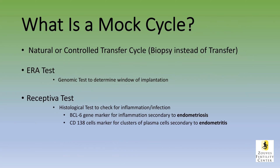So what is a mock cycle? It can be done with the natural cycle or a controlled transfer, but instead of putting an embryo back, we actually do an endometrial biopsy at exactly the same time that you would otherwise be doing the transfer. We take that sample of endometrium, we divide it into two aliquots, and the first half goes for a test called the ERA test, which is a genomic test to determine the window of implantation. The second half of the tissue goes for the Receptiva test, and this is a histological test to check for inflammation or infection.